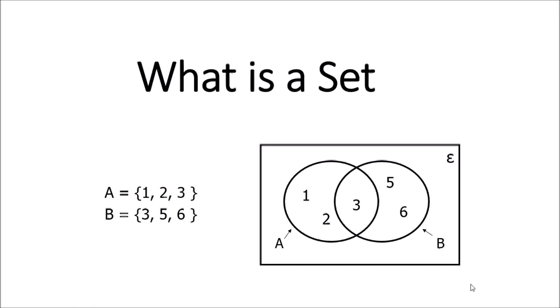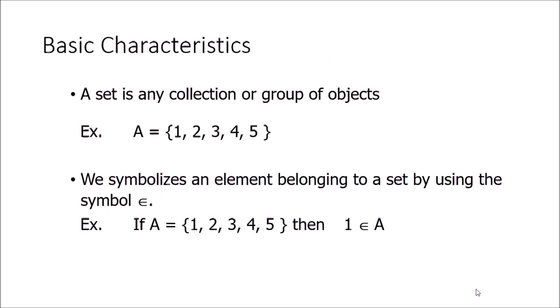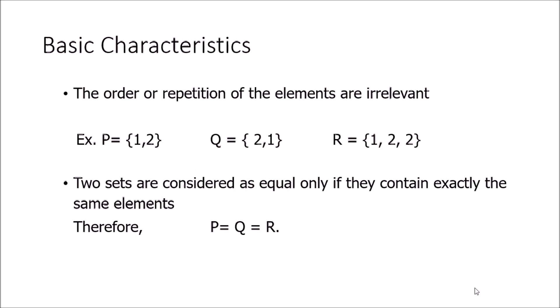Welcome to this tutorial on basic mathematics. Let's look at set theory — first, some basic characteristics of sets. A set is any collection or group of objects. For example, A = {1, 2, 3, 4, 5}. We denote the values of a set within curly brackets. To indicate that an element belongs to a set, we use the special symbol ∈ — so we can write '1 ∈ A' using this symbol.